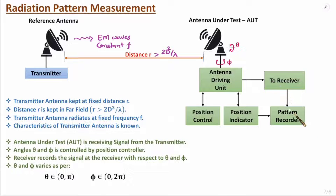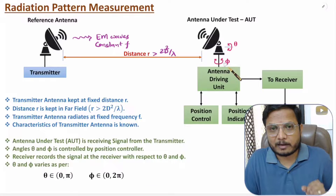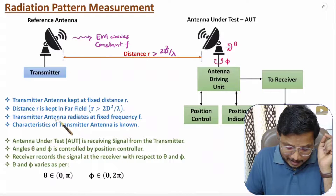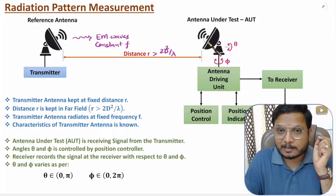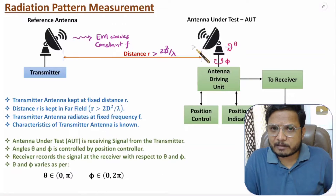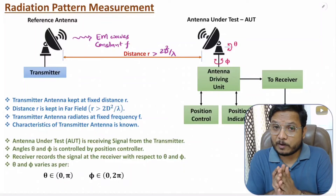After receiving all signals, the radiation pattern is finalized by a radiation pattern recorder. In the measurement, we keep distance r in the far field — greater than 2d²/λ — and maintain a constant frequency of the EM wave. The reference antenna's characteristics are known to us, and with respect to that, we identify the resultant radiation pattern of the AUT. That is the basic setup and mechanism for radiation pattern measurement.